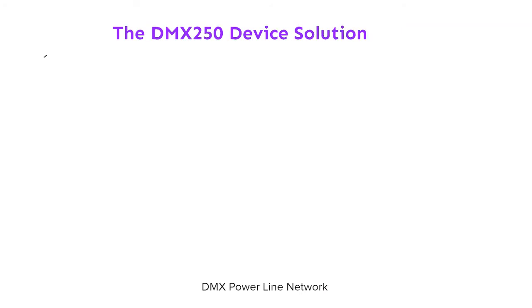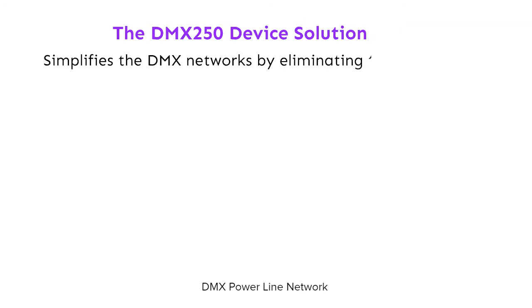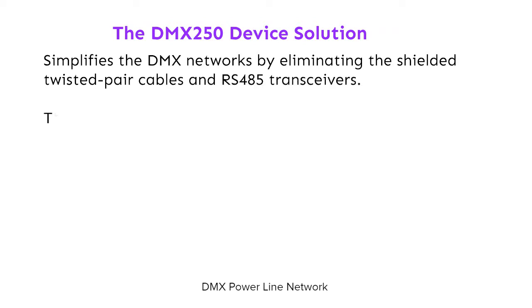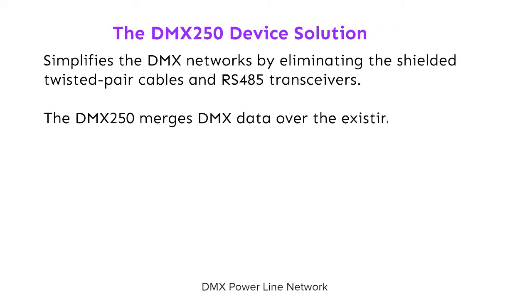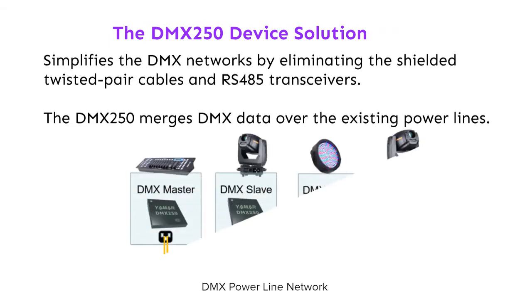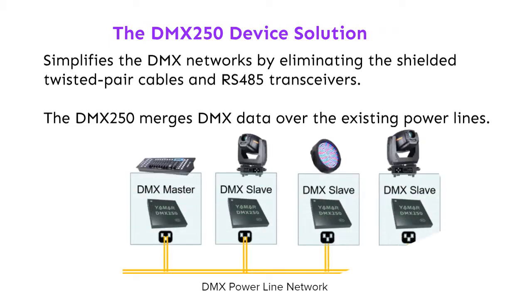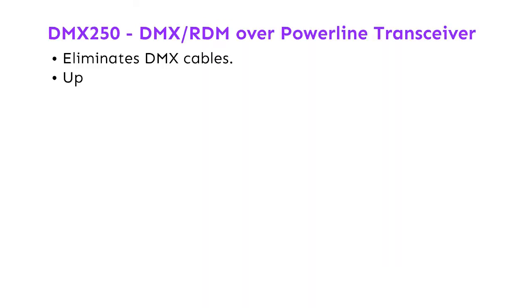The DMX-250 device solution simplifies DMX networks by eliminating the shielded twisted pair cables and RS-485 transceivers. The DMX-250 merges DMX data over the existing power lines, eliminating DMX cables entirely.